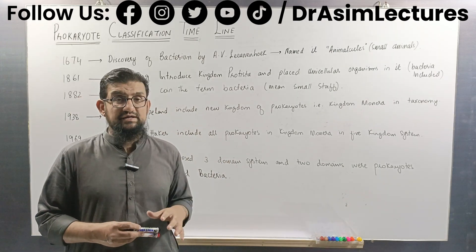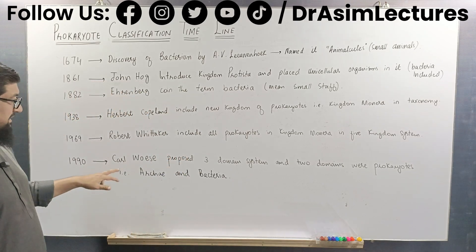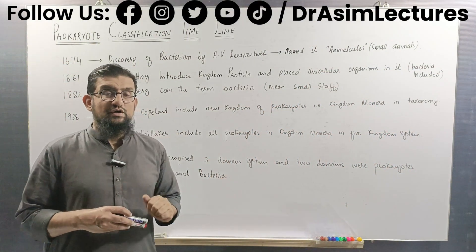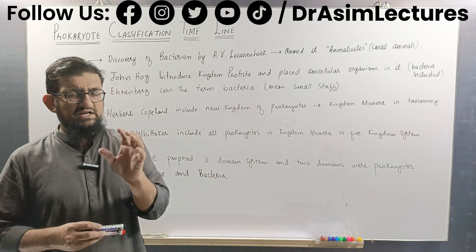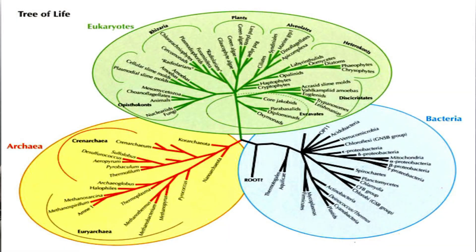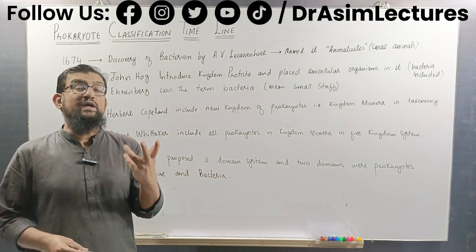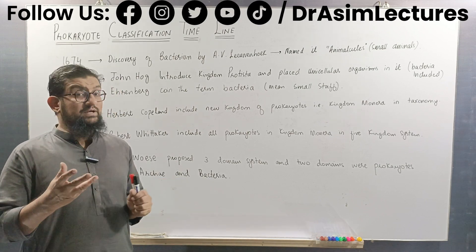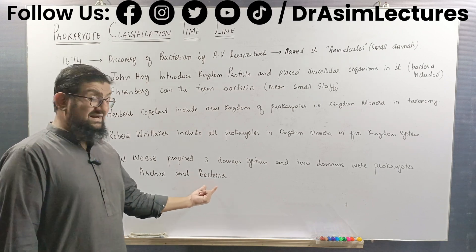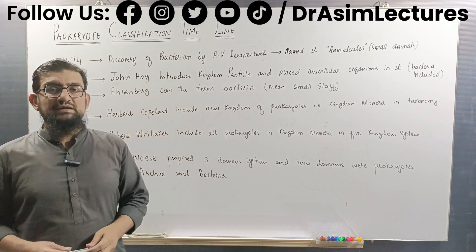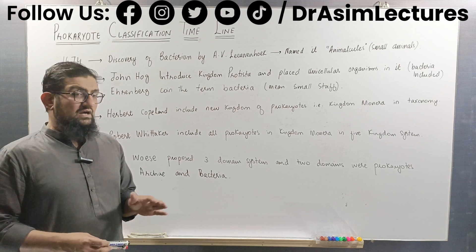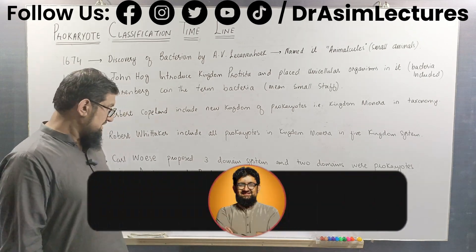The most accepted system of classification nowadays is the three-domain system, introduced in 1990 by Carl Woese. Carl Woese used molecular clocks — segments of ribosomal RNA — to classify different living organisms. He observed that during the process of evolution, life evolved along three lineages, and he devised three domains: domain Archaea, domain Bacteria, and domain Eukarya. Both domain Archaea and domain Bacteria are domains of prokaryotes. In Whittaker's five-kingdom system, archaea were labelled as archaebacteria and bacteria were labelled as eubacteria.